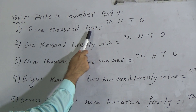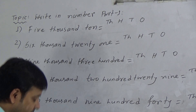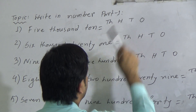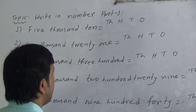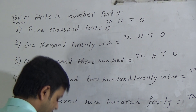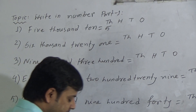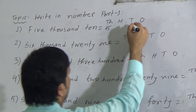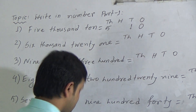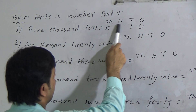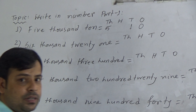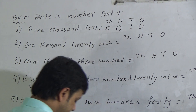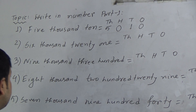First question: five thousand and ten — 5010. I have given here the positions: thousands, hundreds, tens, ones. I have to write 5 below the thousands position. Then to write 10, we need 1 in tens position and 0 in ones position. The hundreds position is left blank, so we fill it with 0. So this is 5010.